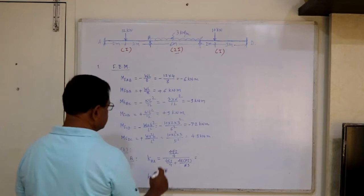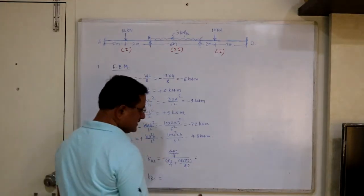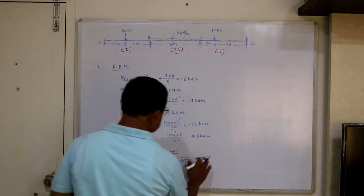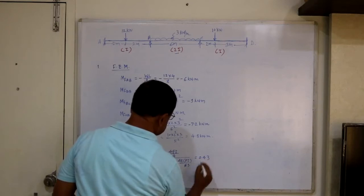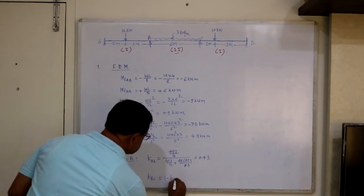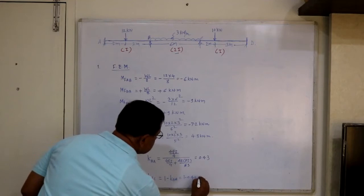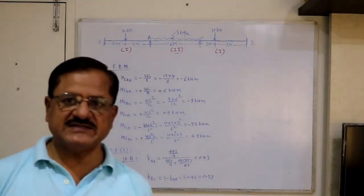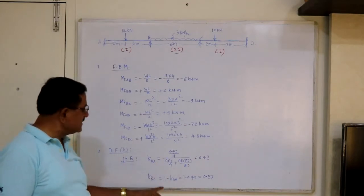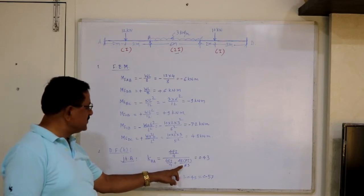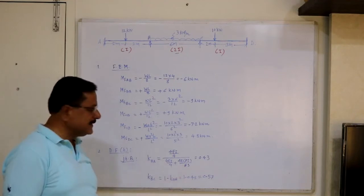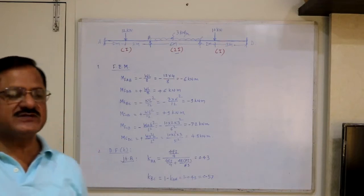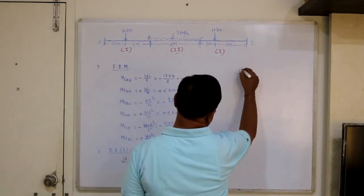Calculating k_BA comes out to 0.43. Since only two members are there and the total sum of distribution factors at a joint equals 1, k_BC equals 1 minus k_BA equals 1 minus 0.43 equals 0.57. You can verify this directly by computing the stiffness of BC — 4E(2I)/6 — divided by total stiffness, and you will get the same answer.